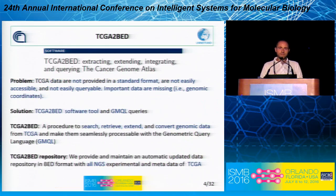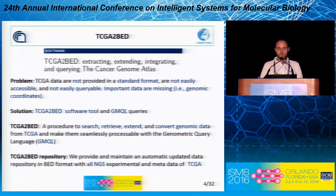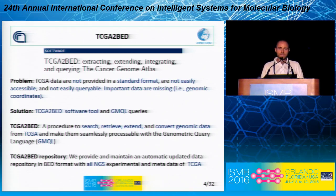The problem is that TCGA data is not provided in a standard format. It's not easily accessible and not easily queryable, and important data for our data model are missing, like genomic coordinates. So what we did is the development of a software tool that acquires the TCGA data and converts it into the BED format, also integrating additional knowledge from other databases like NCBI Gene and other public databases, which can extend the data present on TCGA — for instance, with genomic coordinates.